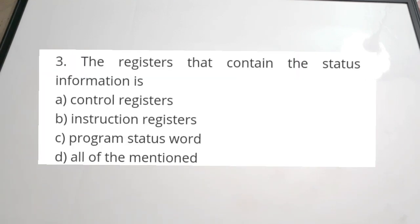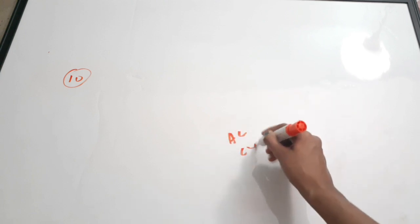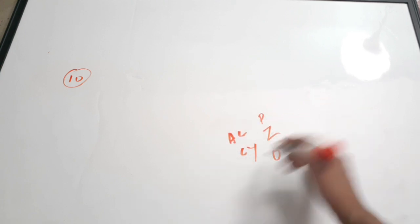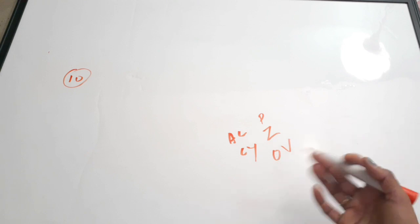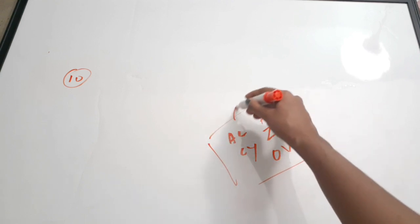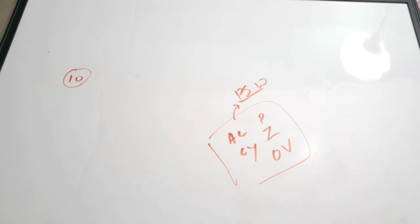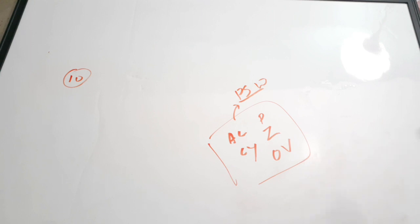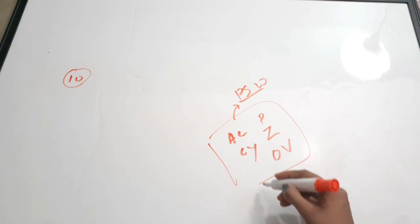Question number ten: the register that contains the status information is — A) control register, B) instruction register, C) program status word, D) all the mentioned. The correct answer is C, program status word (PSW). This register contains status flags such as auxiliary carry, carry, parity, zero, and overflow.